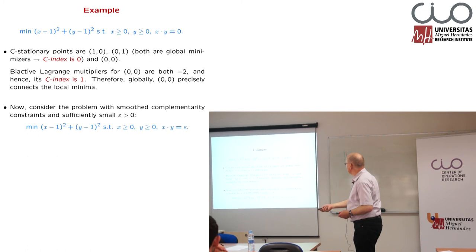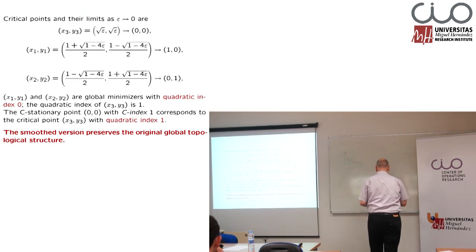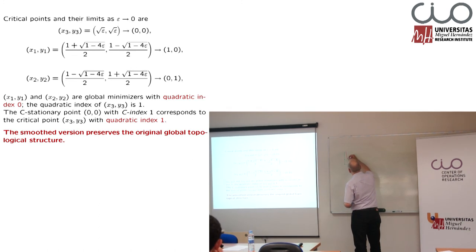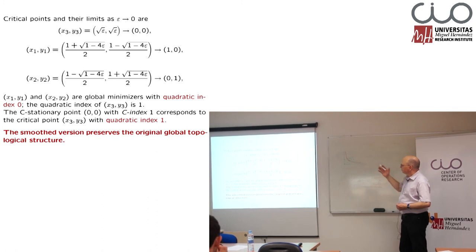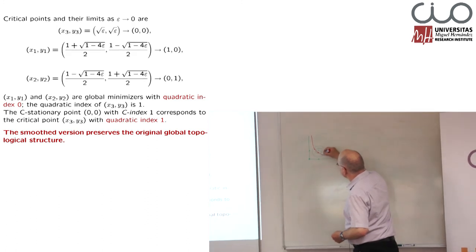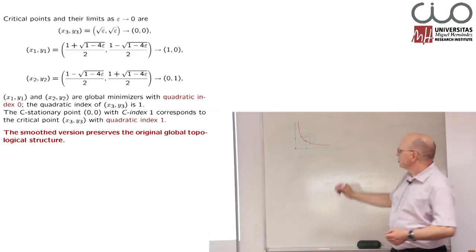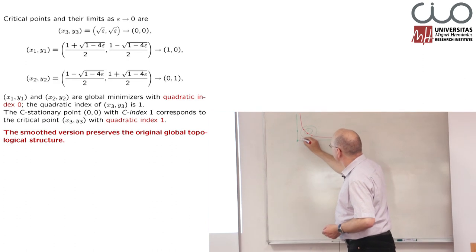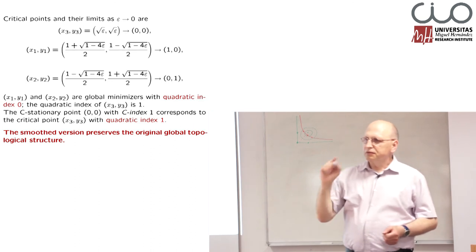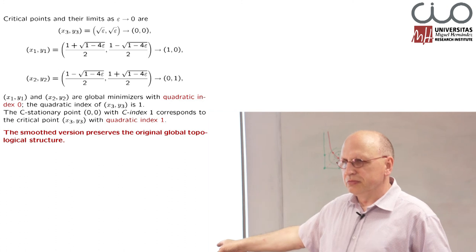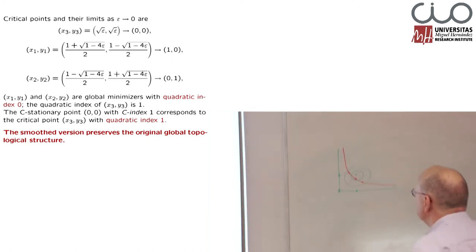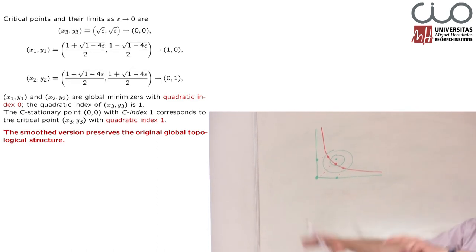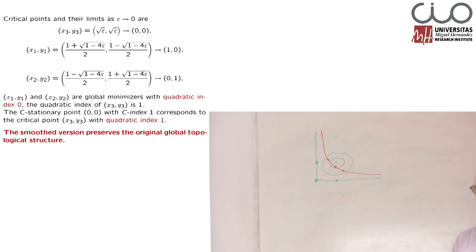That's interesting. What we get is exactly three points: the red curve refers to a standard optimization problem, to a feasible set of a standard optimization problem. We get three stationary points which are converging, as epsilon goes to zero, to these three green points. And they have the same index. In standard optimization, the index is only the quadratic index — only the number of negative eigenvalues. So we have some kind of stability between the number of stationary points under non-degeneracy. The index remains the same, and that's important because the index characterizes the type of stationary points: if it's a local minimizer, a saddle point, or a local maximizer.